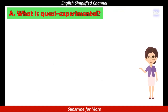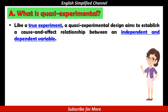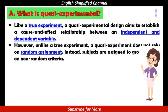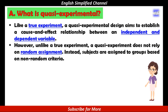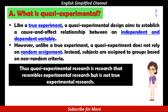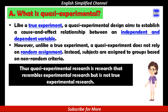Part A. What is quasi-experimental? Like a true experiment, a quasi-experimental design aims to establish a cause and effect relationship between an independent and dependent variable. However, unlike a true experiment, a quasi-experiment does not rely on random assignment. Instead, subjects are assigned to groups based on non-random criteria. Thus, quasi-experimental research is research that resembles experimental research, but is not true experimental research.